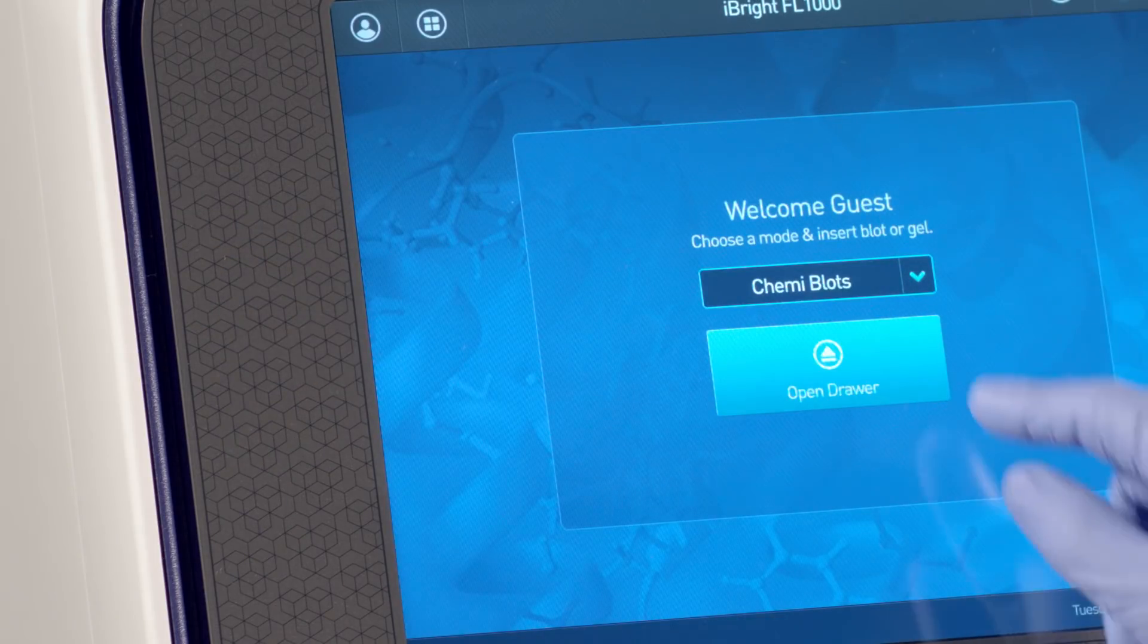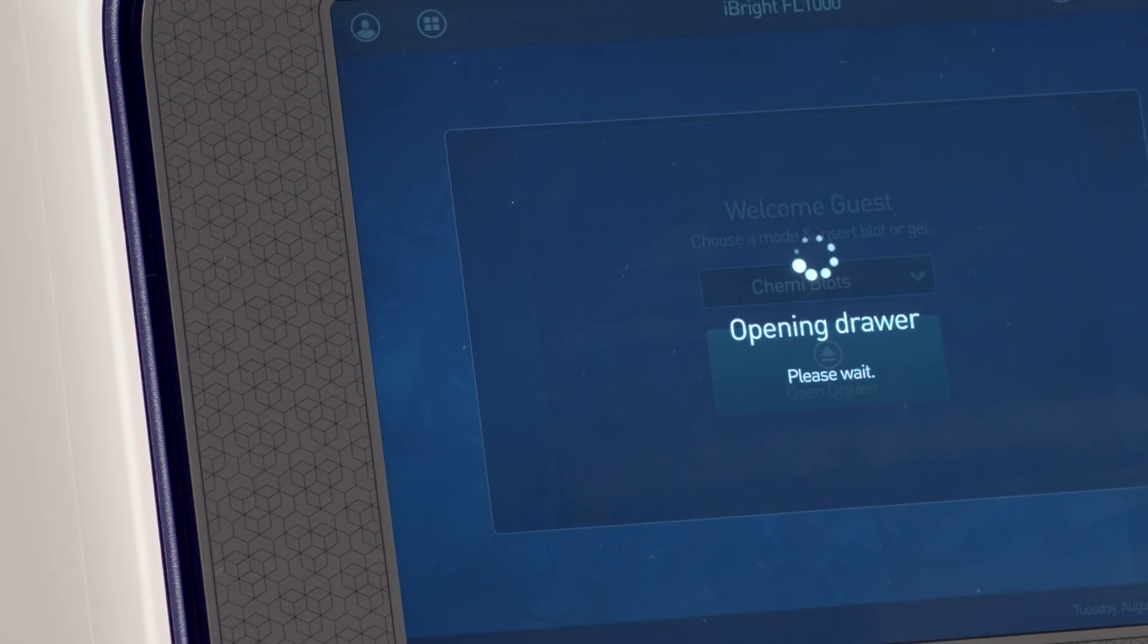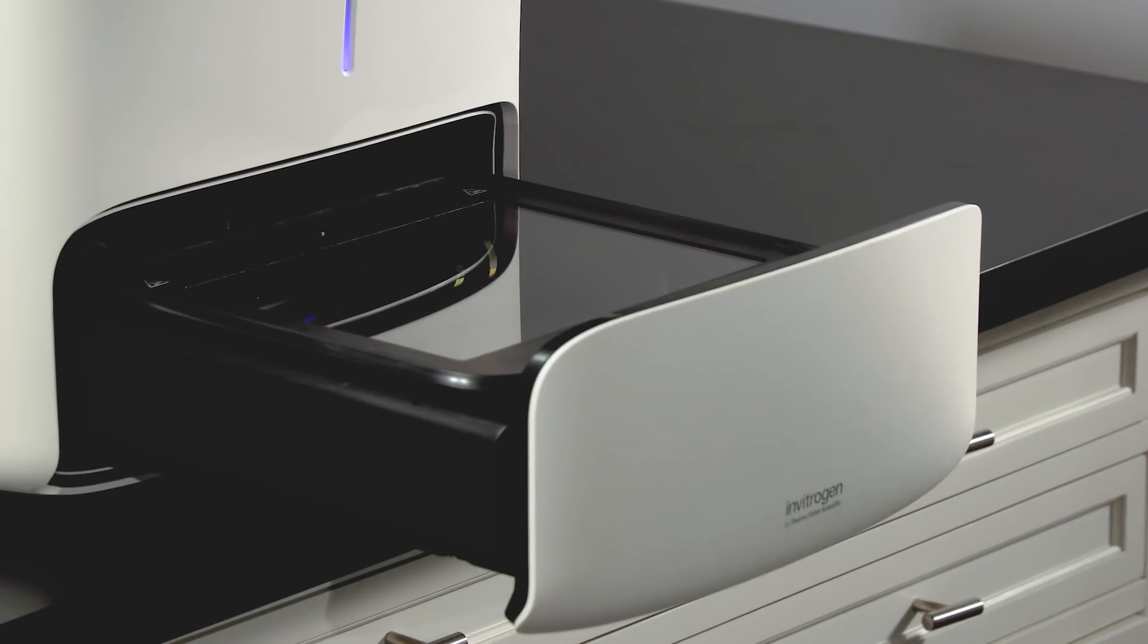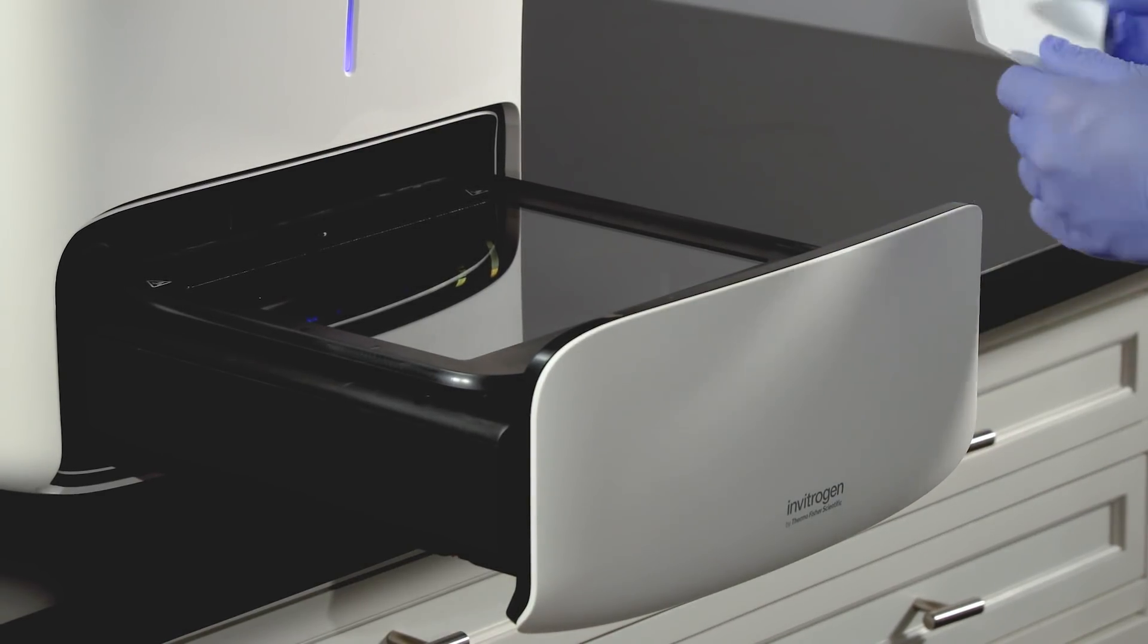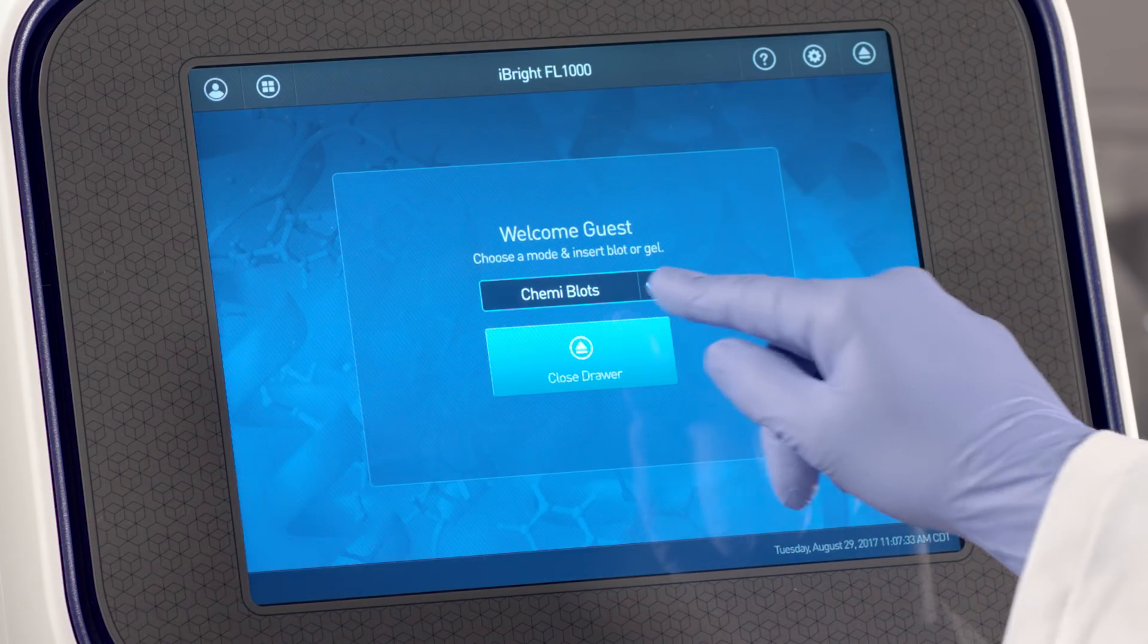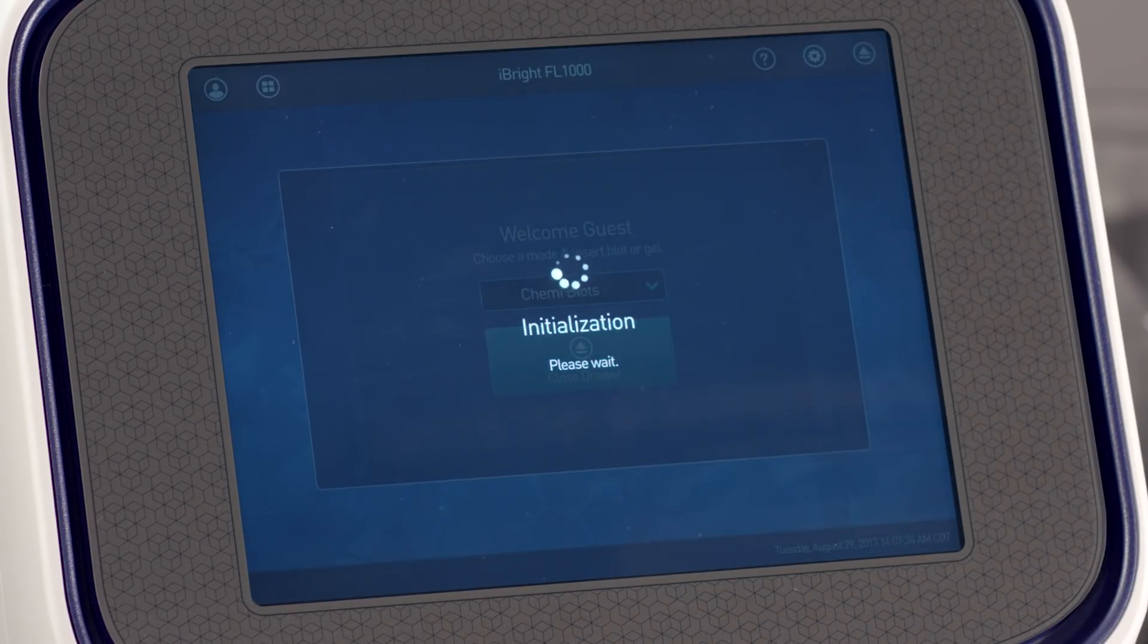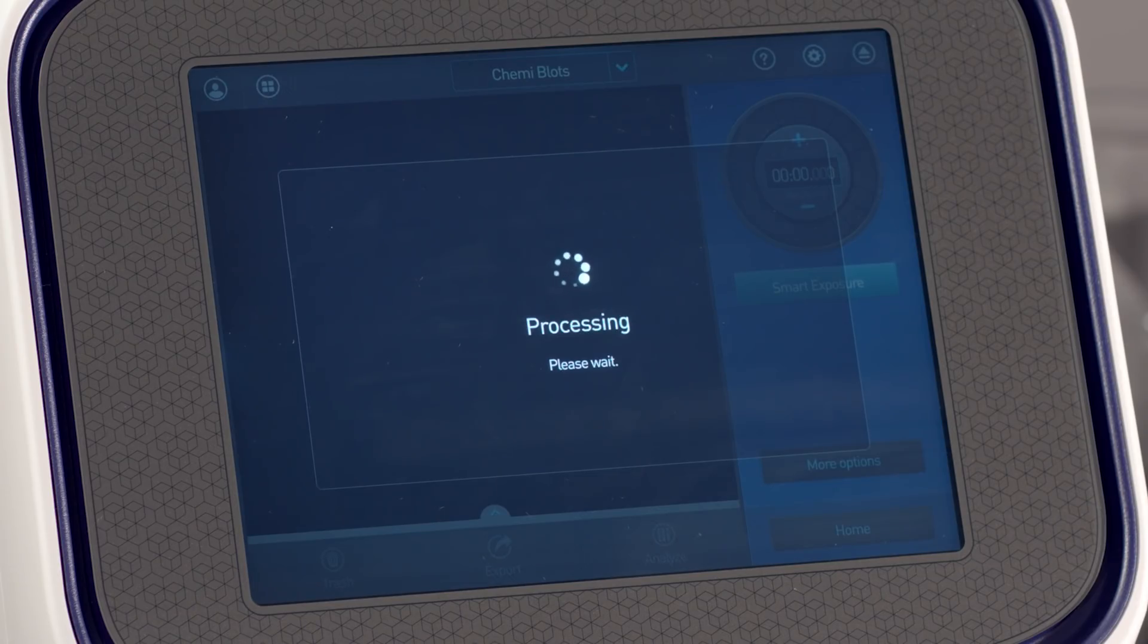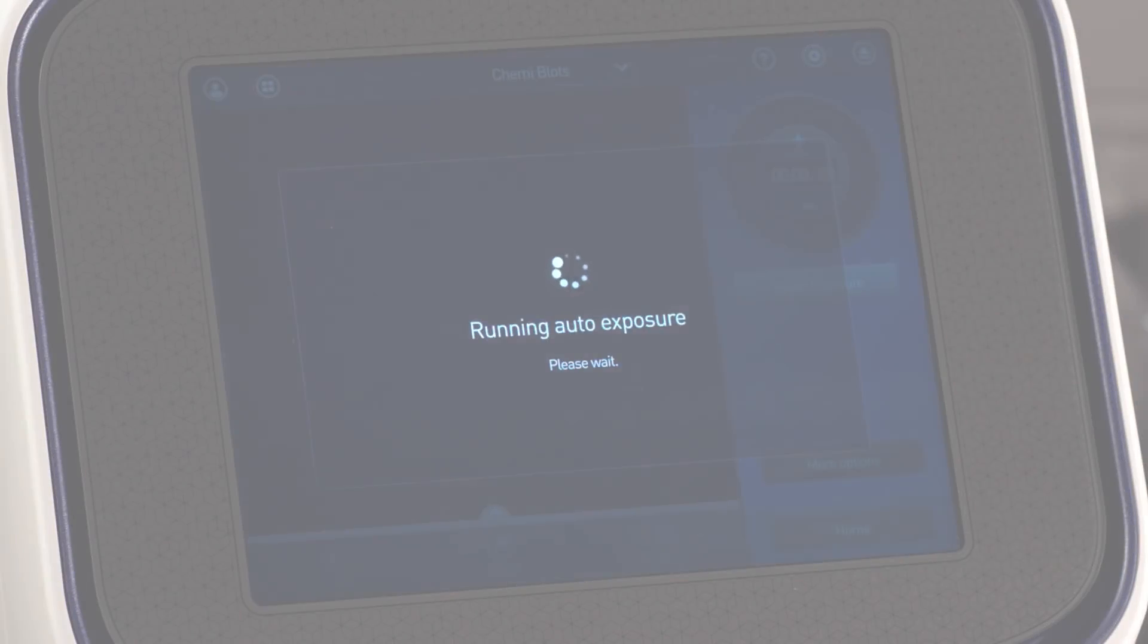Open the sample drawer. Insert your sample. Close the sample drawer. Eyebrite automatically focuses, zooms, and rotates the sample before a live view.